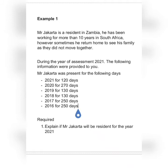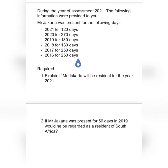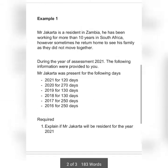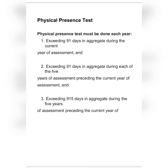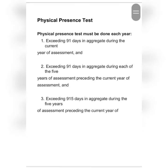Mr. Jakarta was present for the following days: in 2021 he was there for 120 days, in 2020 for 270 days, and so on through 2016. The requirement asks: will Mr. Jakarta be a resident for the year 2021? Requirement number one says the person must stay for more than 91 days in the current year. Our current year is 2021, and he stayed 120 days — so Mr. Jakarta met requirement number one.